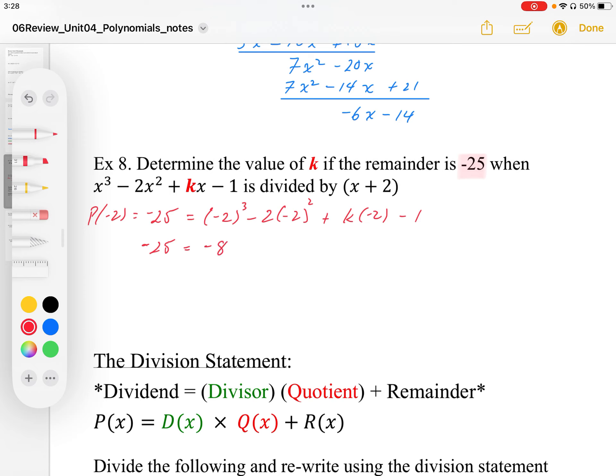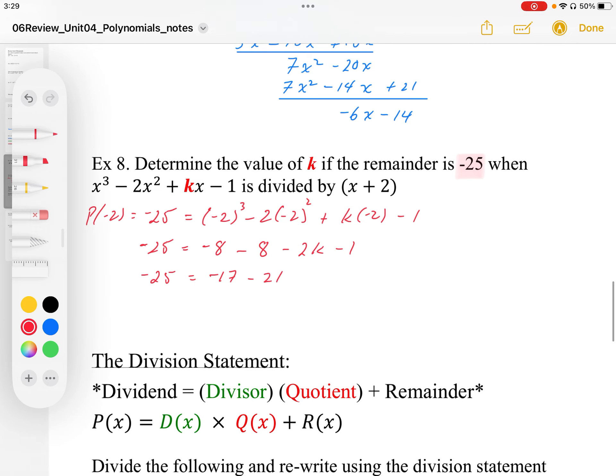So here we have negative 8 minus 8 minus 2k minus 1. So I end up with negative 17 minus 2k. I'm going to move the 2k to this side, I'm going to add 25 to both sides, I get positive 8. So I get k is equal to 4. So to get a remainder of negative 25, the k value needs to be equal to 4.